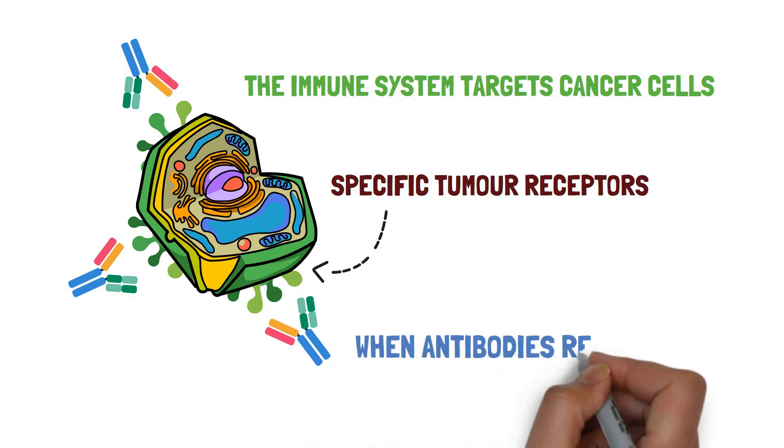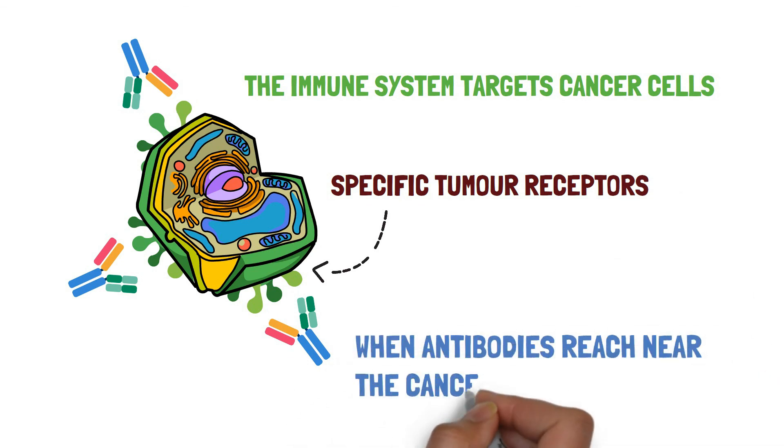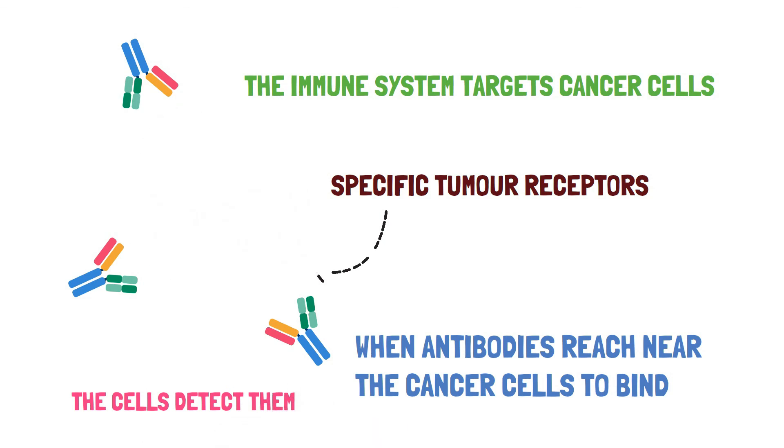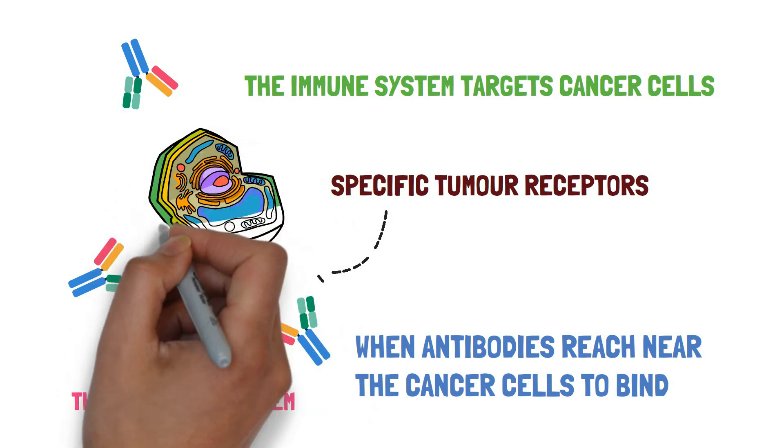But whenever these special antibodies reaches near the cancer cells, the cancer cells detects these incoming antibodies and automatically hide these tumor receptors from the immune system.